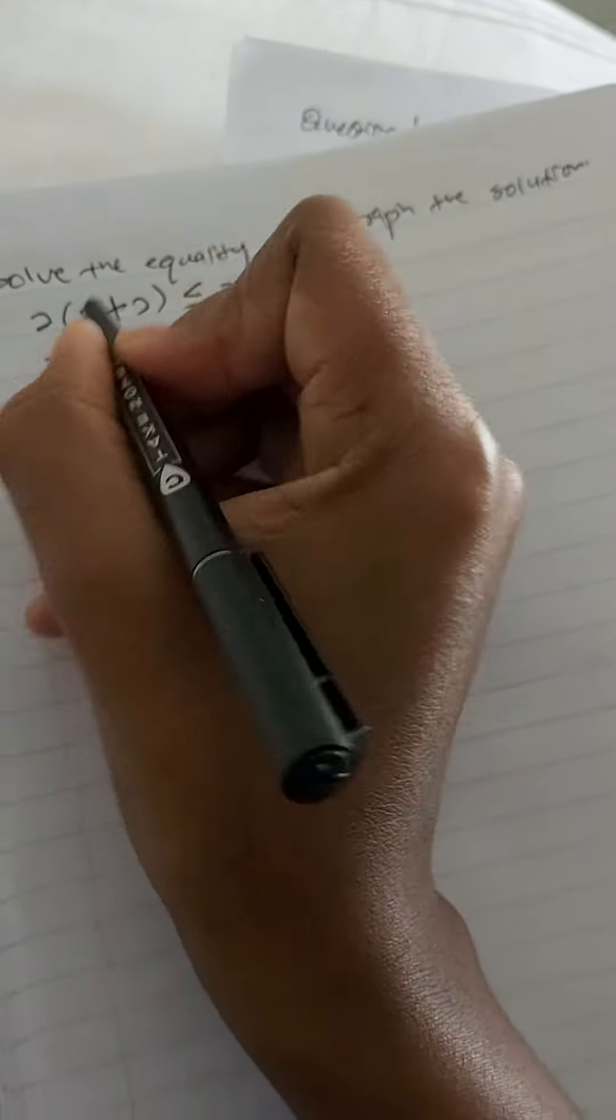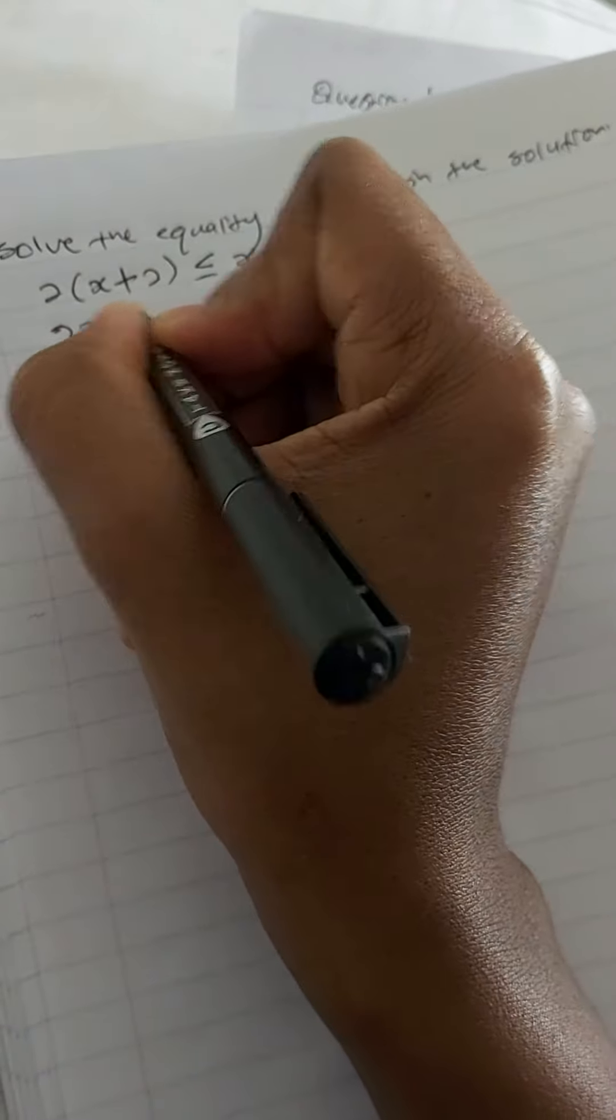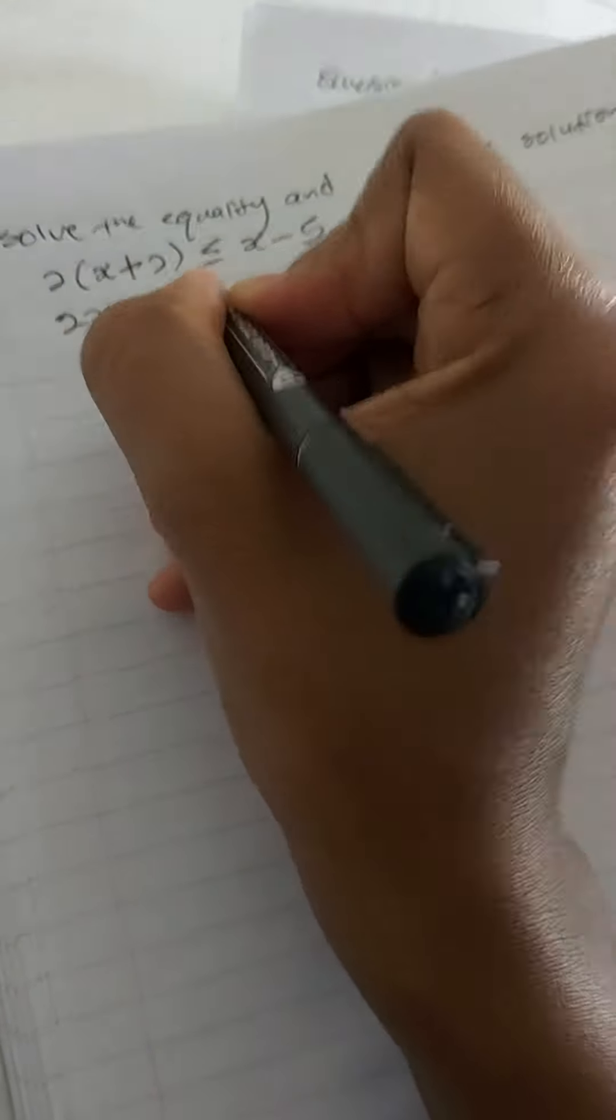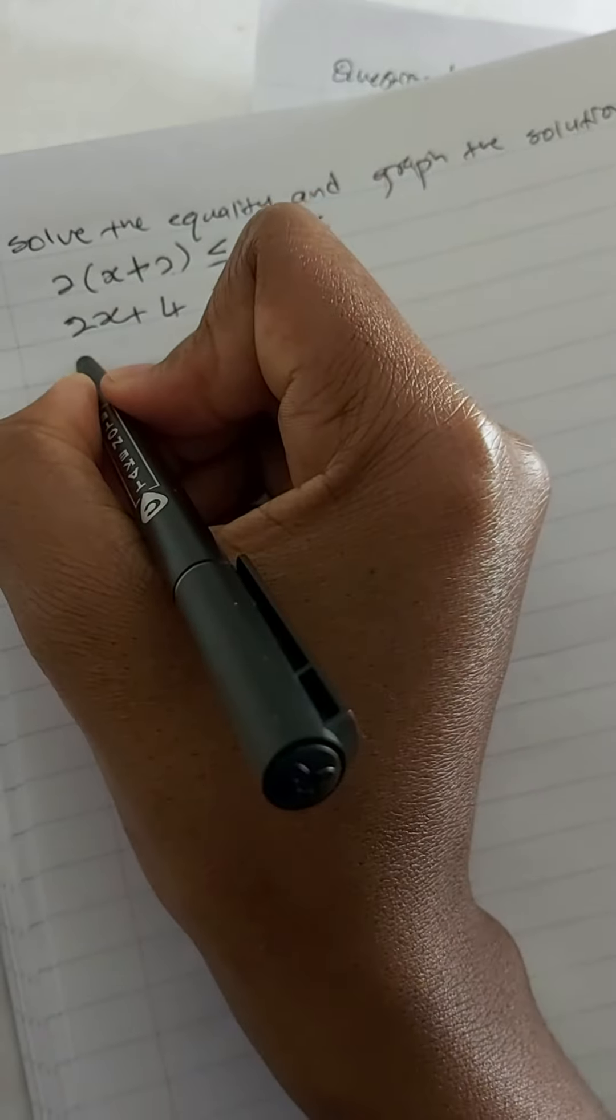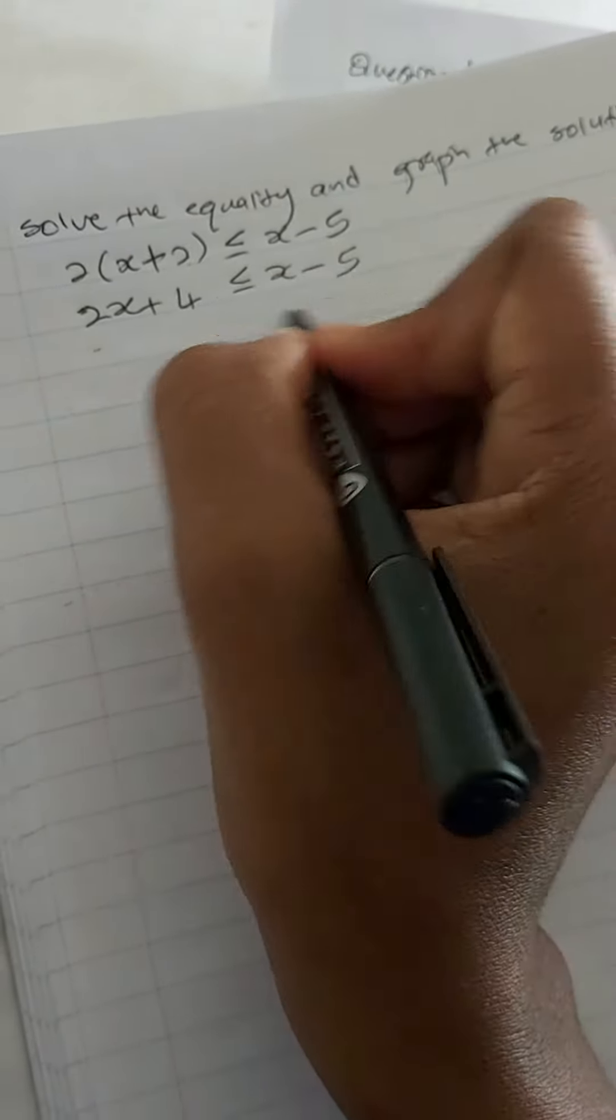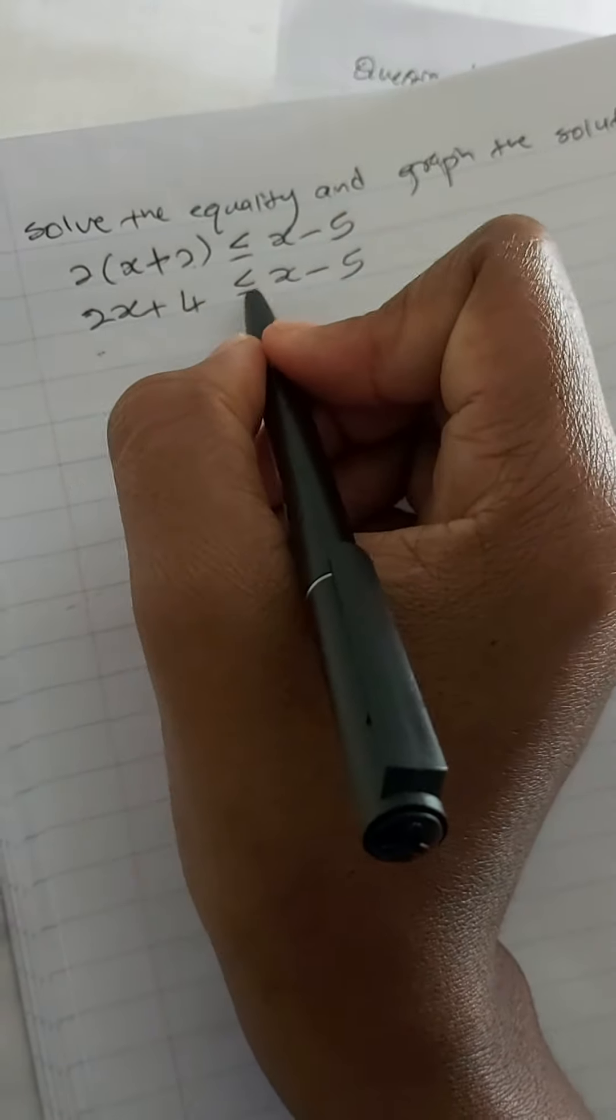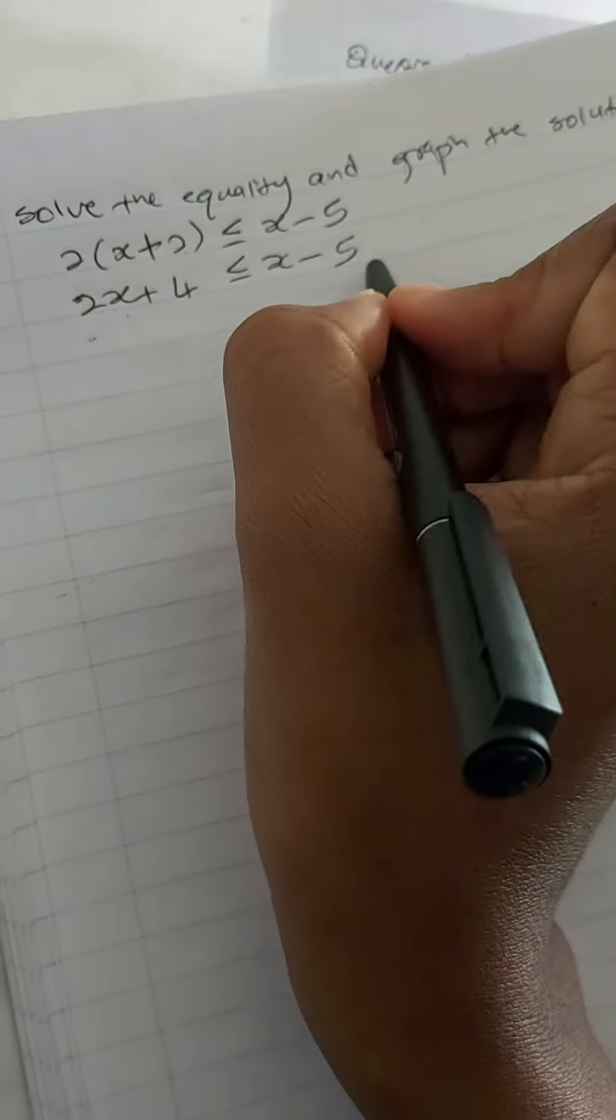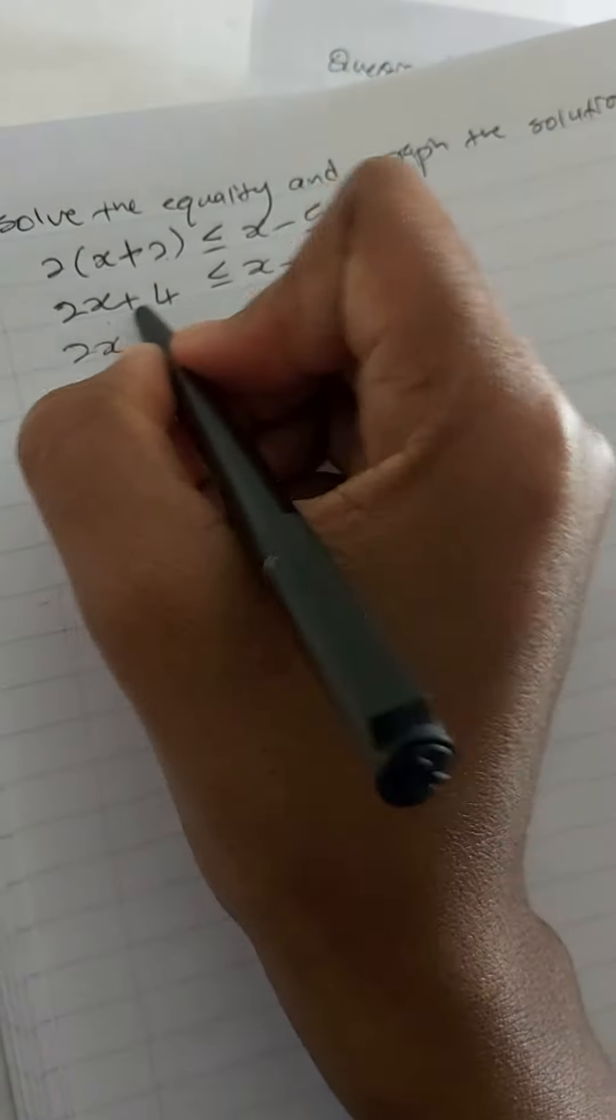So let's remove the bracket. 2x plus 4 is less or equal to x minus 5. Then we can move the terms around. We move x to this side and the constant to that side, so we've got 2x minus x is less or equal to...